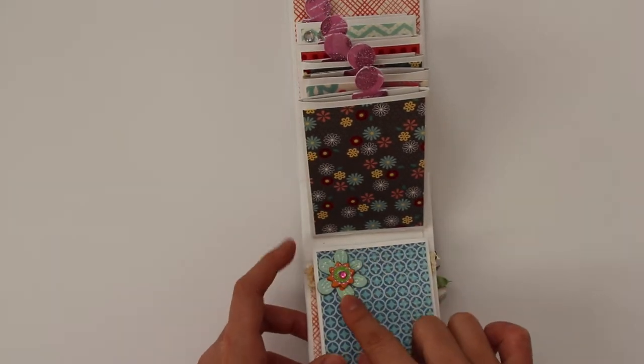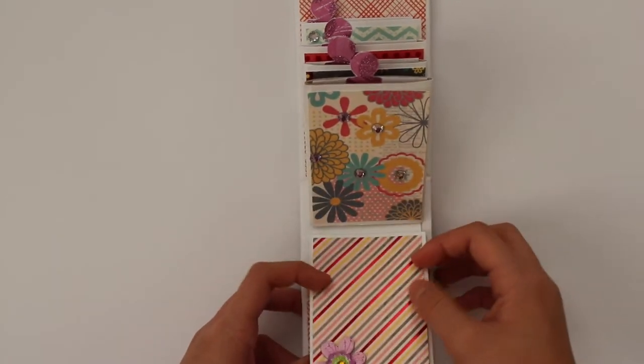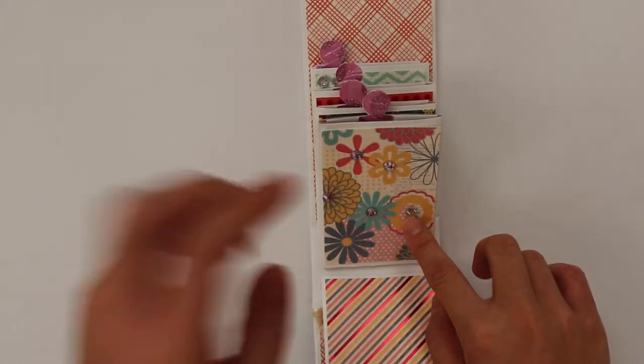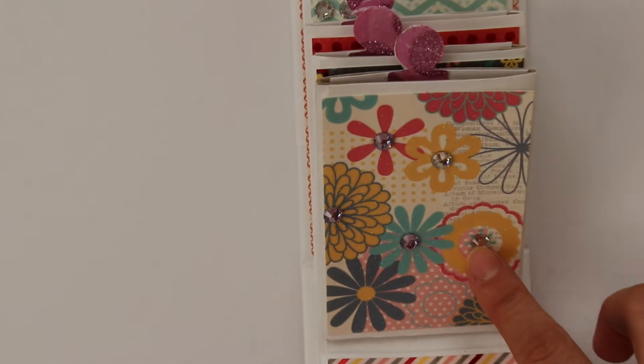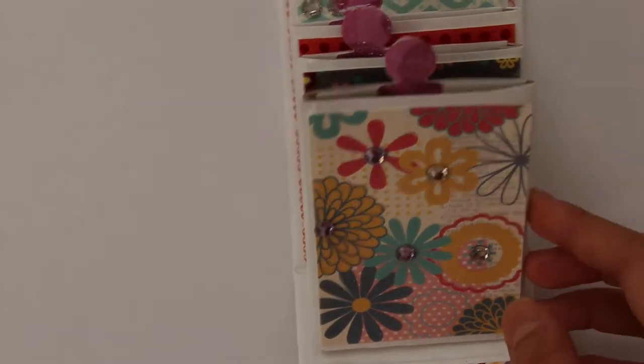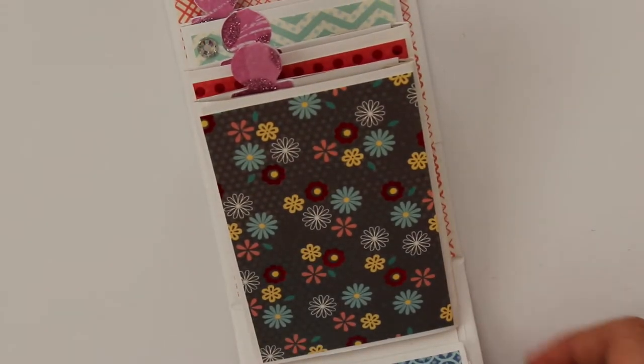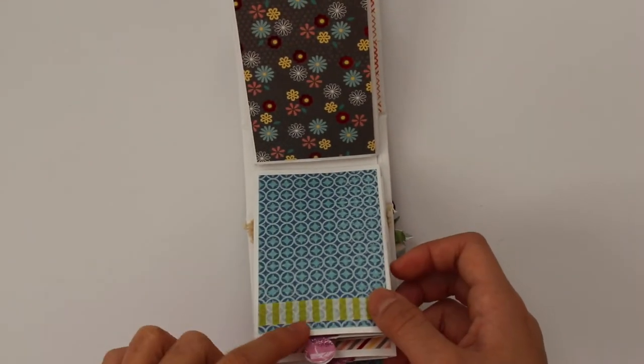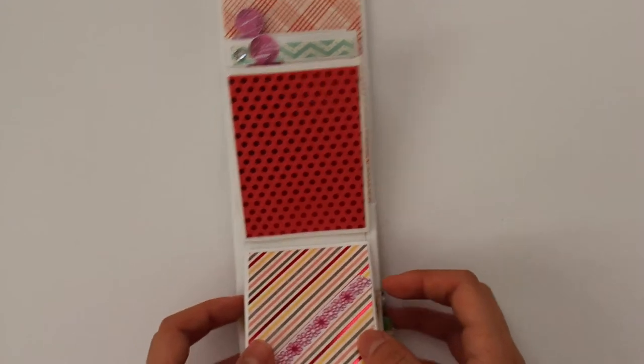You flip it over, here's a chipboard flower and then another chipboard flower here, and then some bling here if you can see. It just looks like that, and I added a piece of washi tape right here.